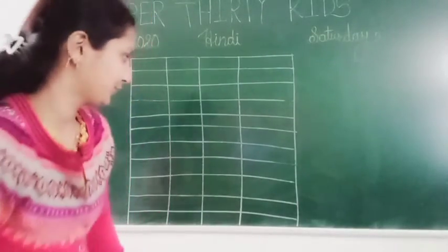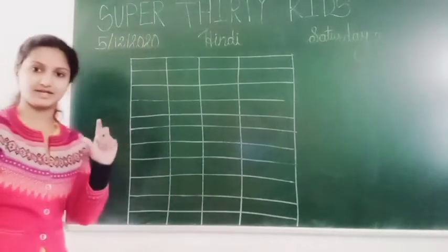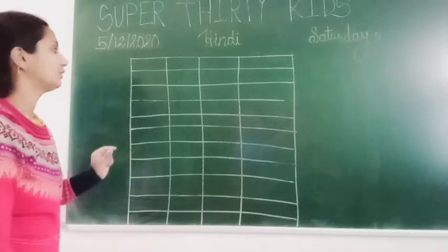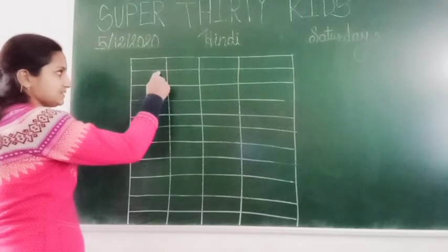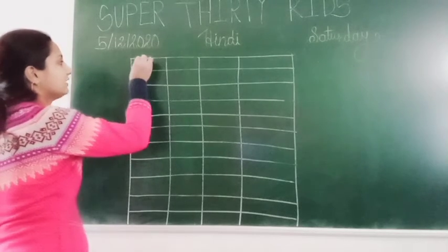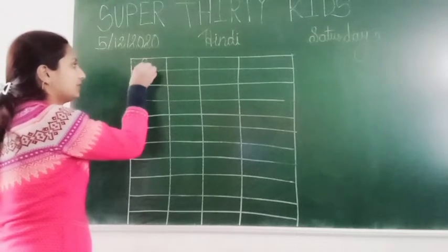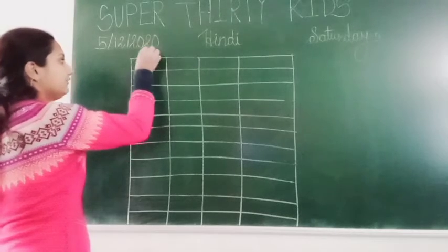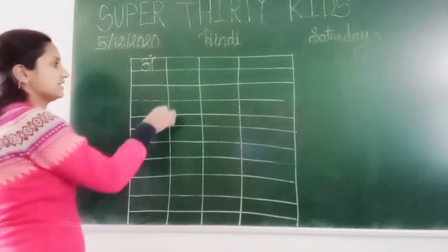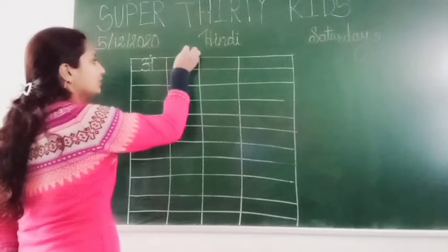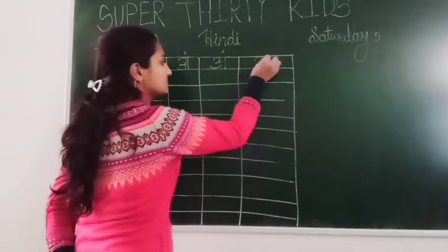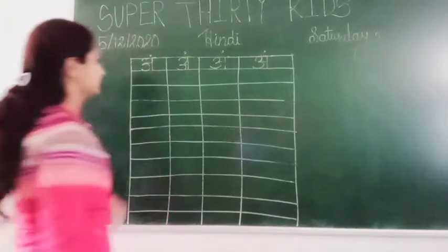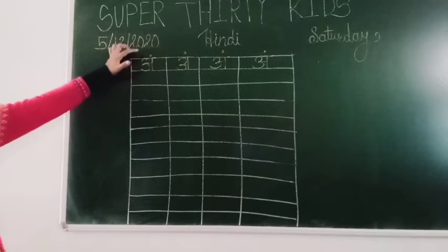Now, this is your notebook page. Aapke notebook mein ek line hai lichni hai. So how to write Ang in one line? Here we have two lines. Okay, we have to write in the middle - write 'a' and give one dot upside. This is Ang se anda, Ang se angur. You have to use the whole line and give the dot upside of the line.